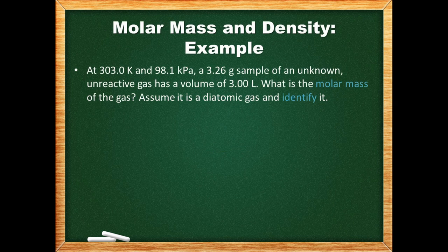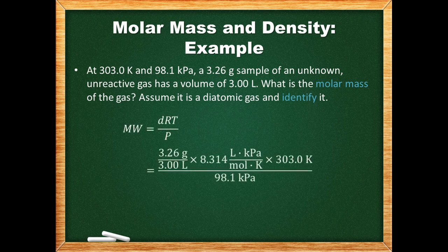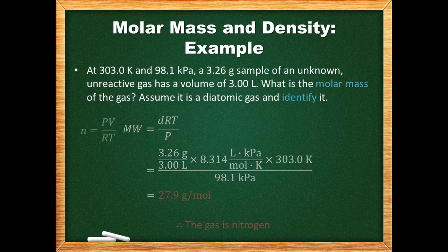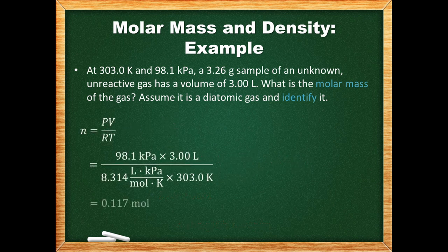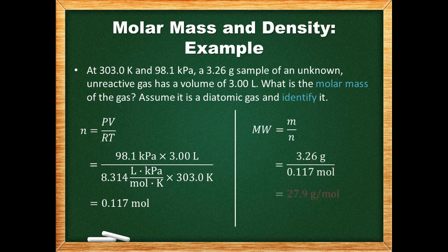Let's try out an example problem. We have a 3.26 gram sample of an unknown gas with a volume of 3 liters and we're asked for the molecular mass. We have all the values needed for the kitty cat equation. The density is simply the mass of the gas divided by the volume. The pressure is in kilopascals, so we use R in terms of kilopascals. We get a molecular weight of 27.9 grams per mole. If we assume the gas is diatomic, it is most likely nitrogen, which has a molecular weight of 28.0 grams per mole. We could also solve this by determining the number of moles separately using the ideal gas law and dividing the given mass by that — either method gives the same molecular weight.